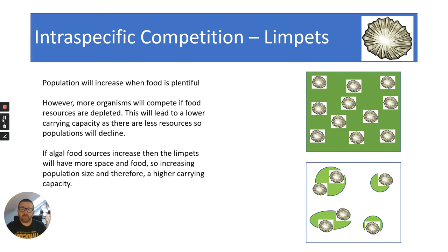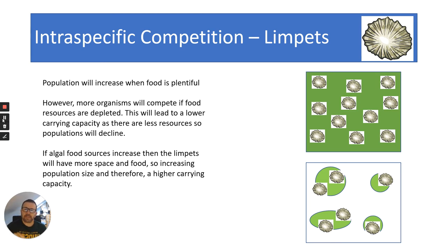Another good example of intra-specific competition is the robin. The robin is very good at having territory - you'll only find one robin in a specific area because they protect that territory and won't allow other robins in; they will fight them. In fact, studies have put out fluffy toy robins and actual real robins will attack those fluffy robins because they're looking for the red breast. Therefore, there is intra-specific competition.